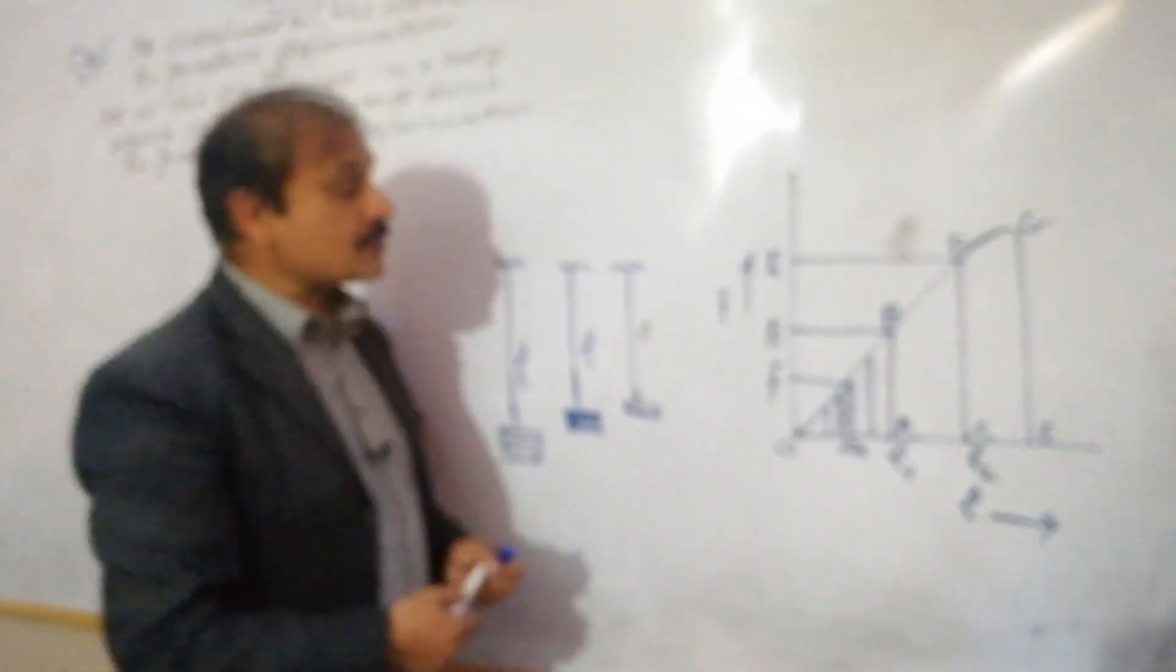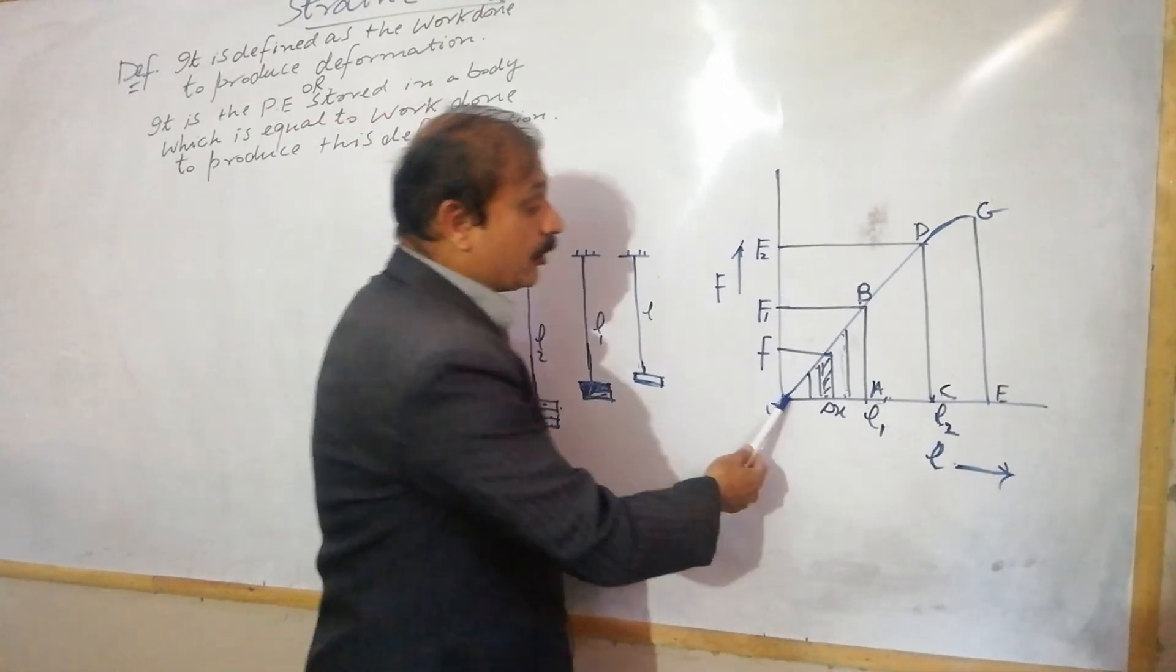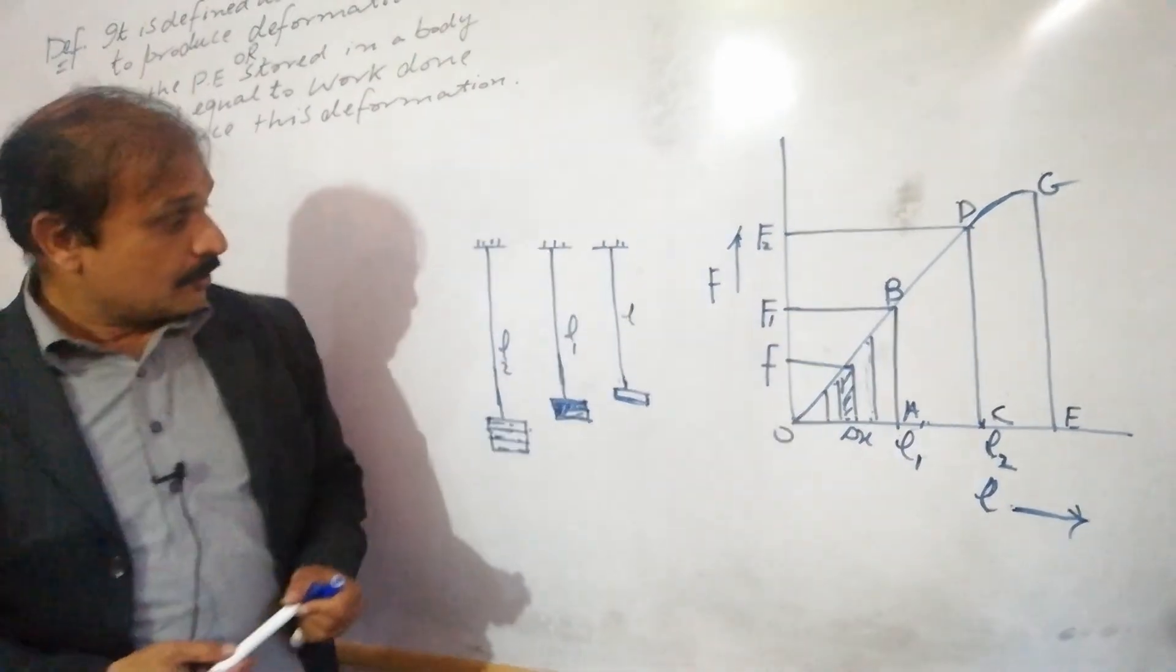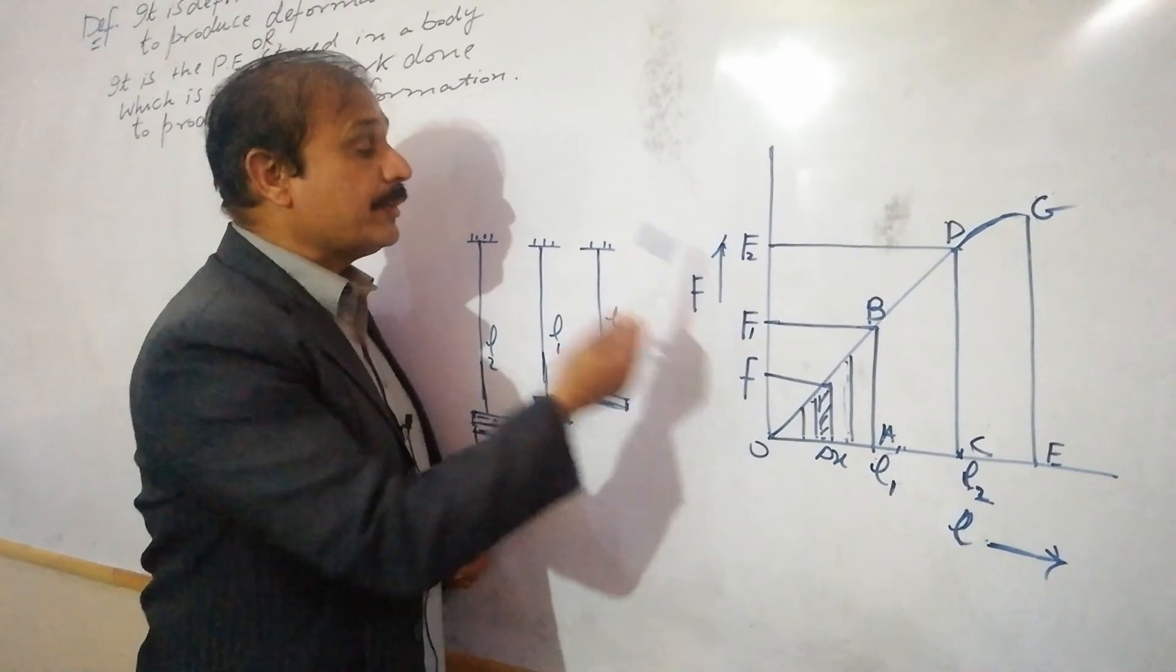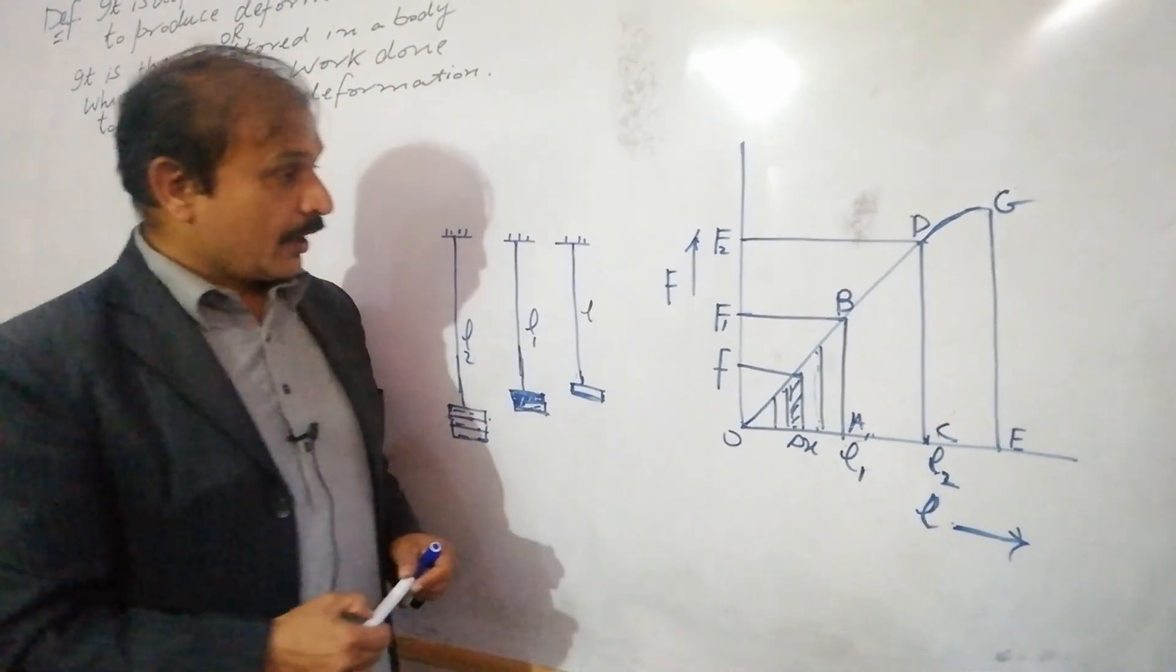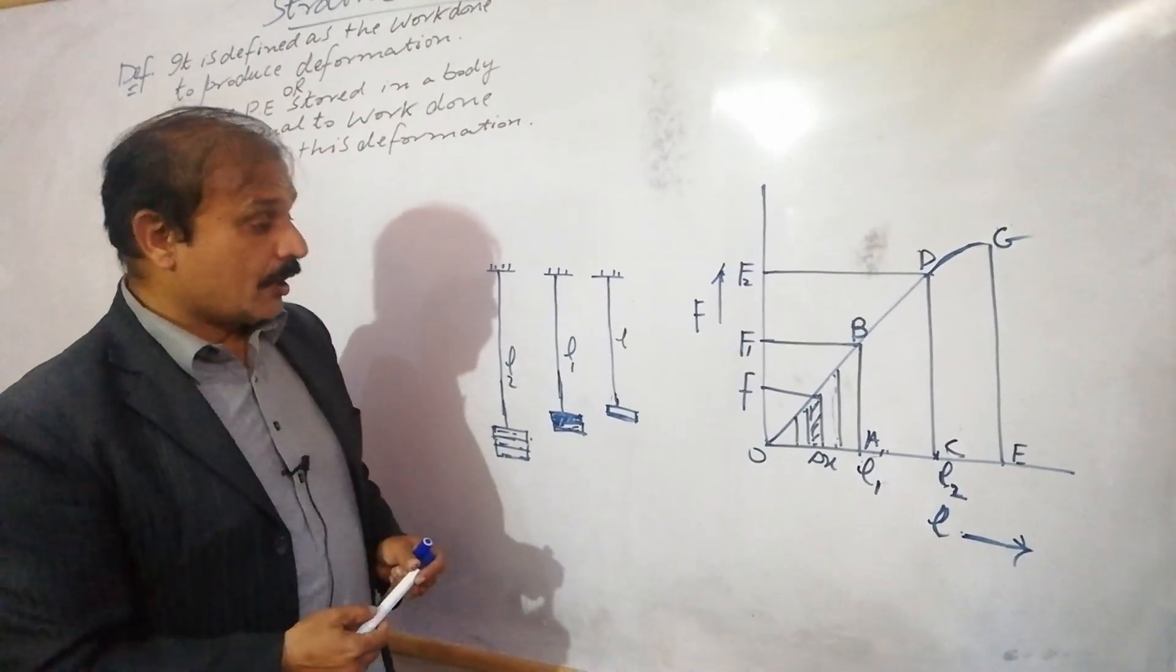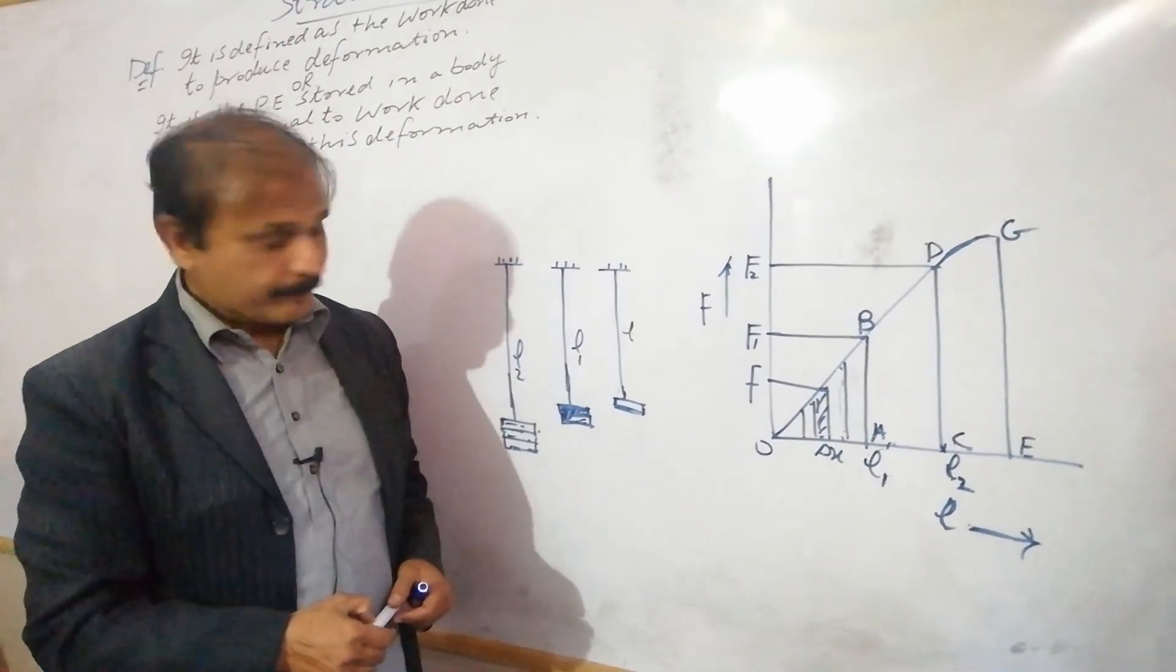This means if we are adding force, the extension definitely increases - the extension is L1, L2, and so on. Now come to this graph. Look at this graph, very important. On the horizontal axis we take the extension L, and on the Y axis we take different values of forces. We have small f with smaller extension delta x.